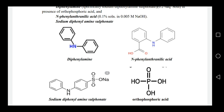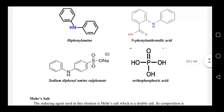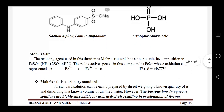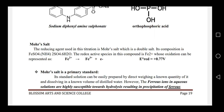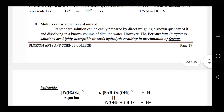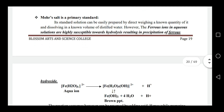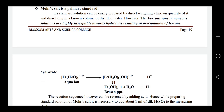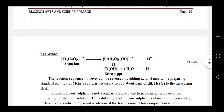As the reducing agent, we use Mohr's salt — a double salt with the composition FeSO4·(NH4)2SO4·6H2O. It contains Fe²⁺ which is oxidized to Fe³⁺. Mohr's salt is a primary standard. However, this solution is highly susceptible towards hydrolysis, resulting in precipitation of ferrous hydroxide.